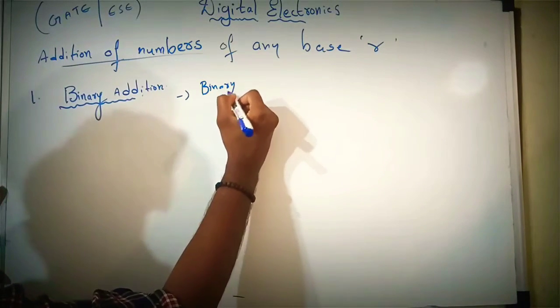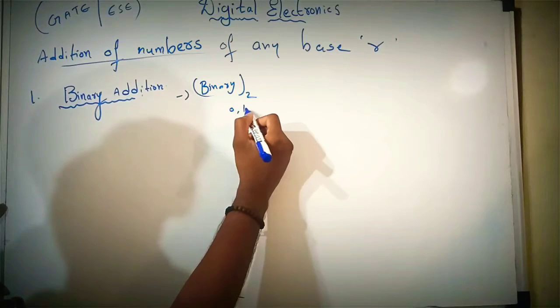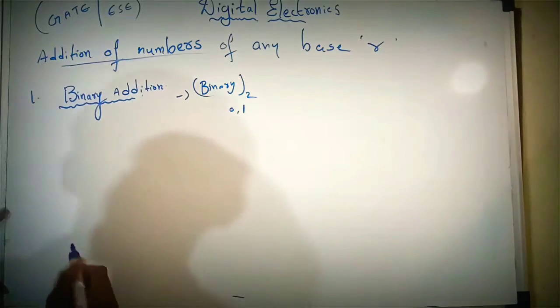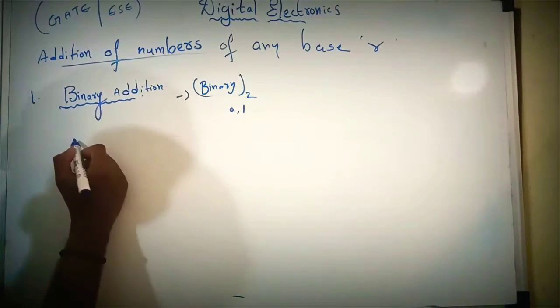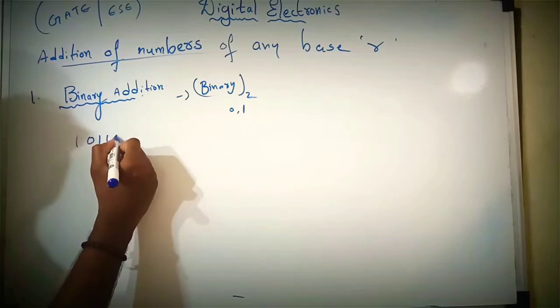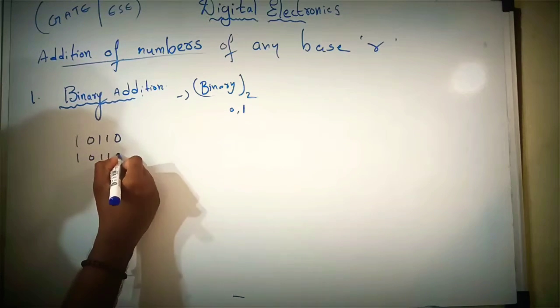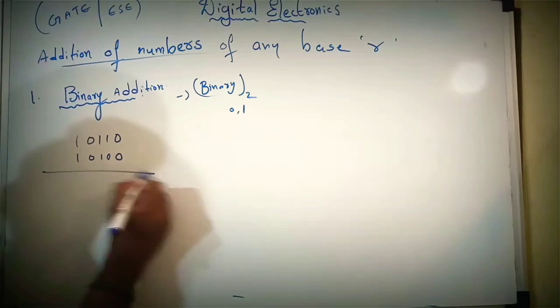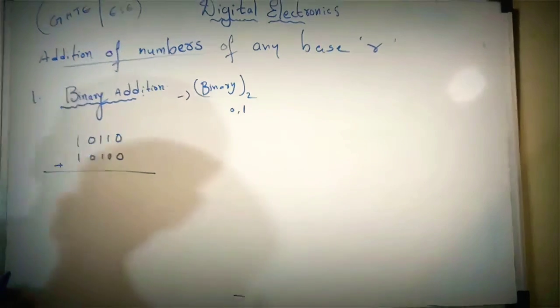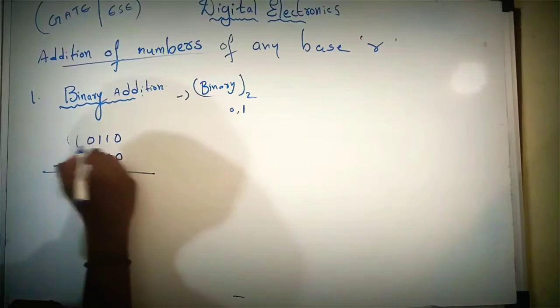Here in binary the base is 2 and the bits are 0 and 1. Let's take any two binary numbers: 1 0 1 1 0 1 and 1 1 0. To add these two numbers, first of all we will see that these are base 2.